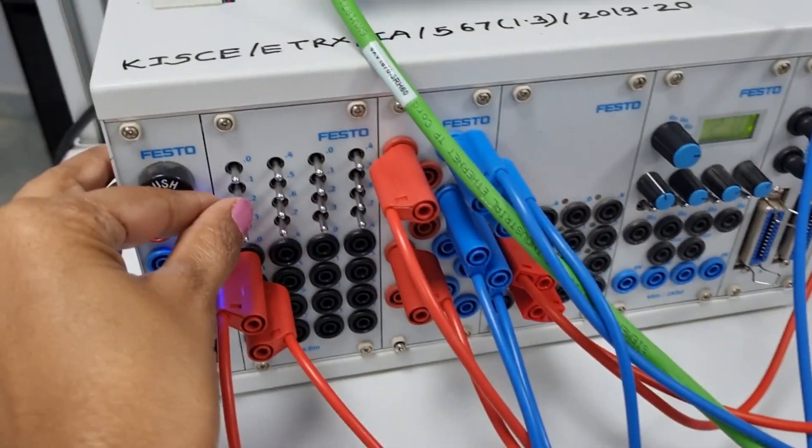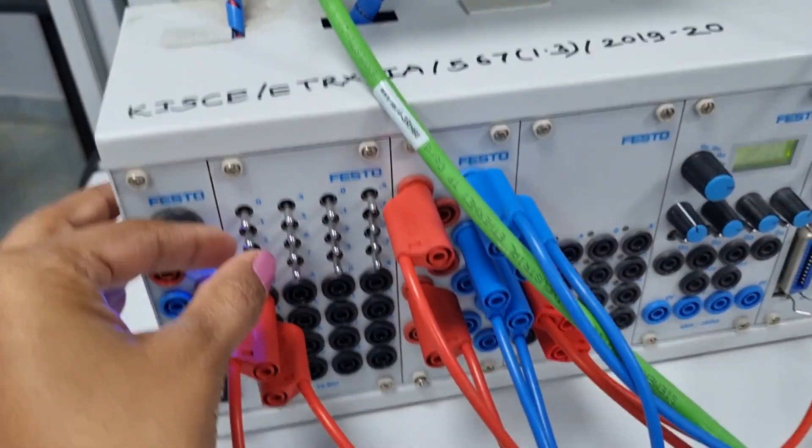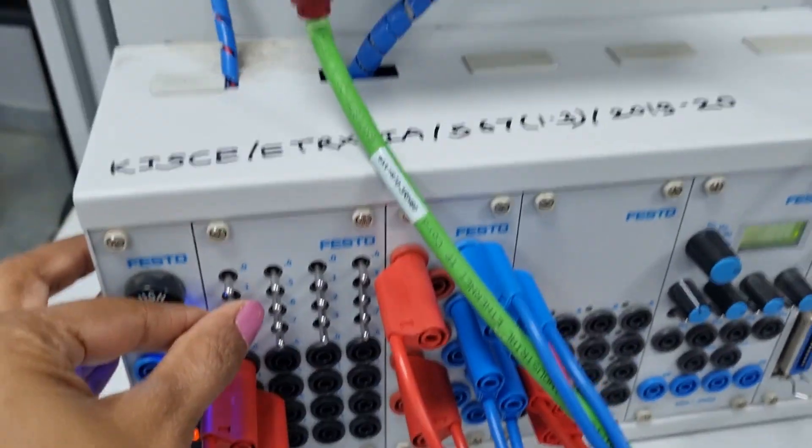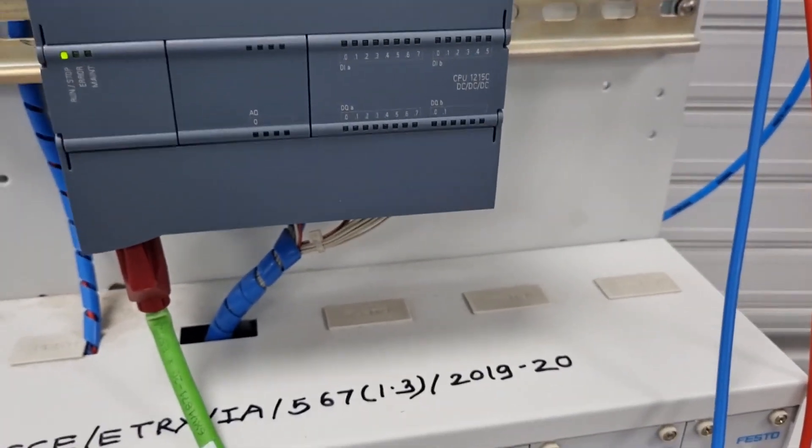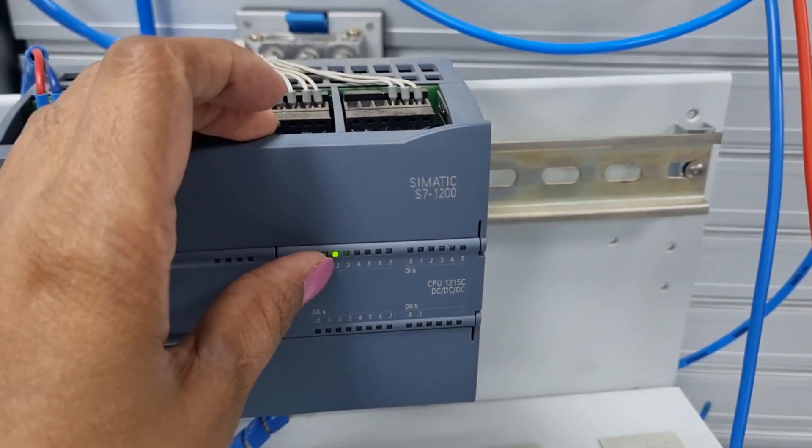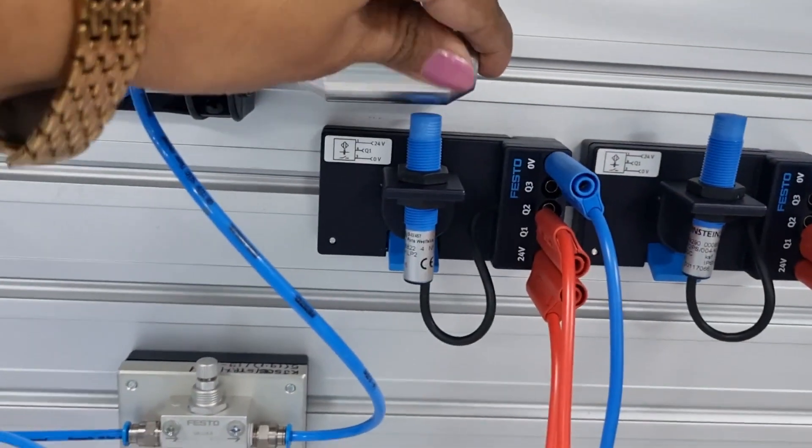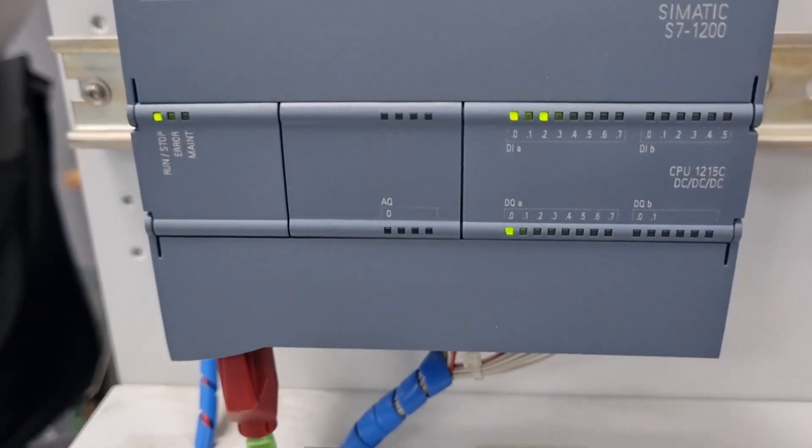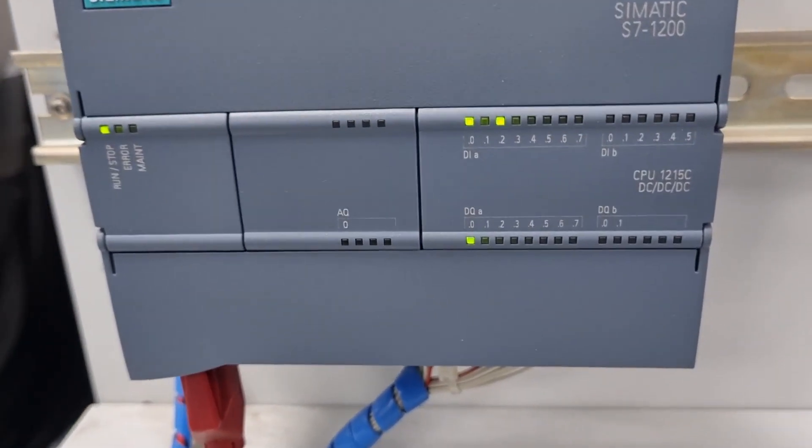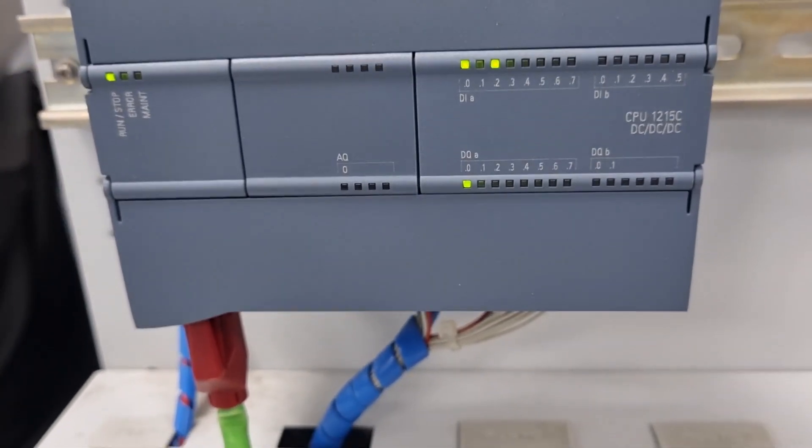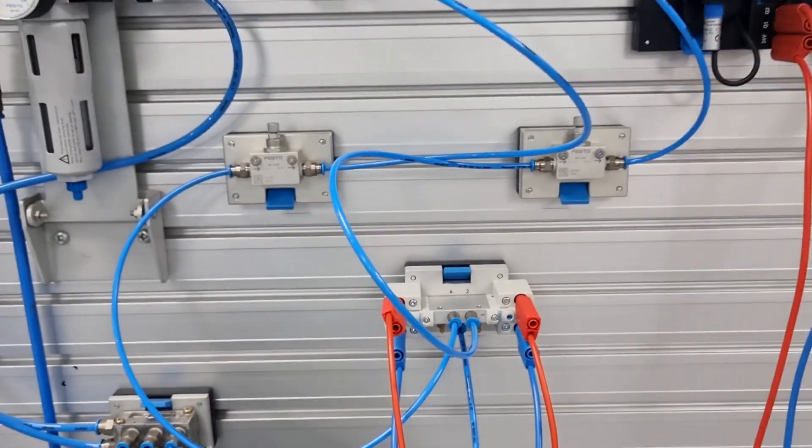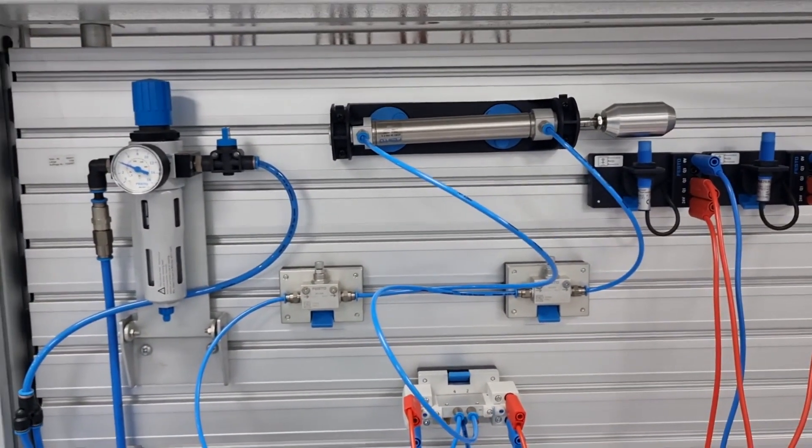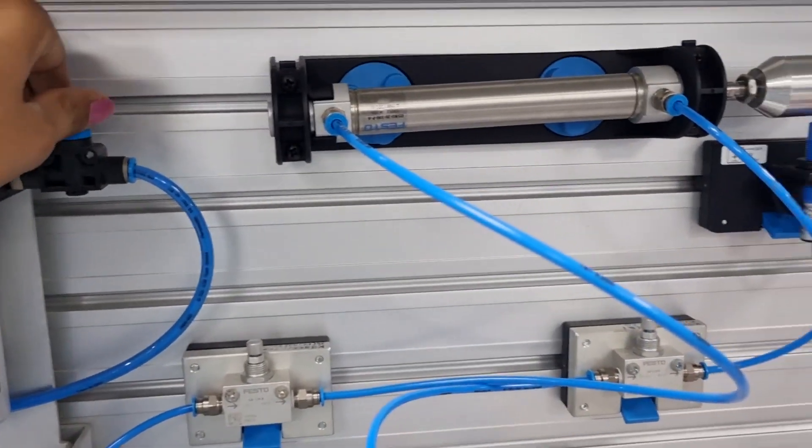To start this, I have to turn on this switch which is connected to I0.2. This is the start switch, and I'll keep it in the lower end. Now you can see both inputs are high - I0.0, which is the sensor input, and I0.2, which is our start switch. Now the signal to the solenoid valve is given. The cylinder is not moving because I have not yet started the pneumatic supply. Now I'm going to start the pneumatic supply.